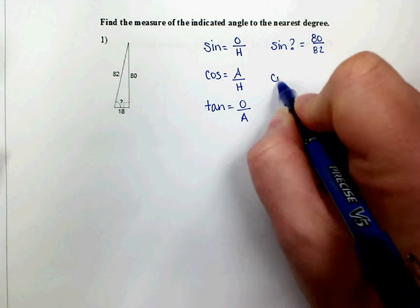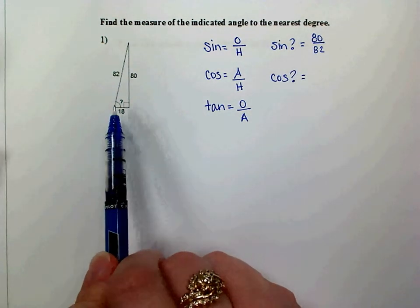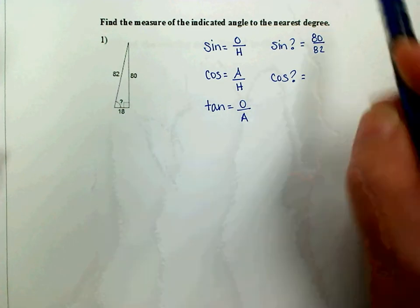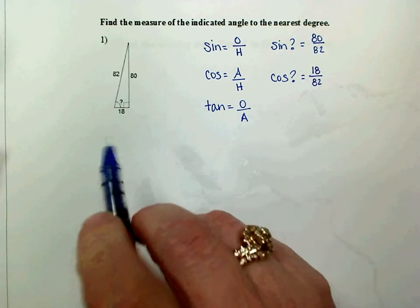If we were using the cosine, the cosine of our angle would be adjacent over hypotenuse. So from the angle's perspective, the adjacent side is 18. The hypotenuse is still the same, the side across from the right angle, which is 82.